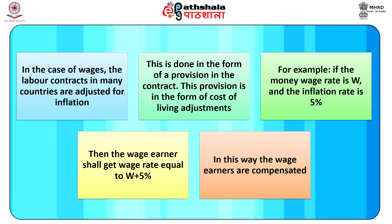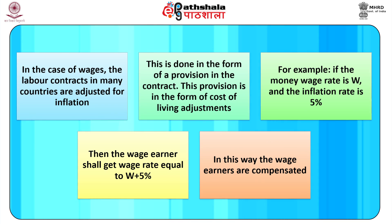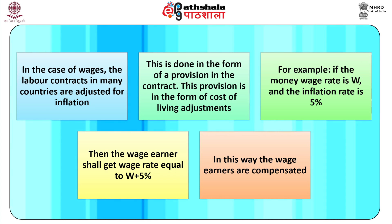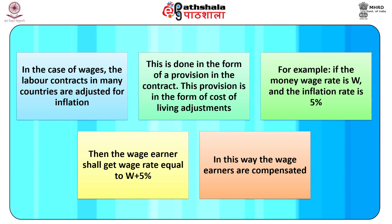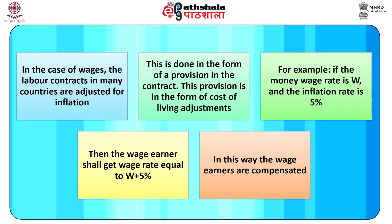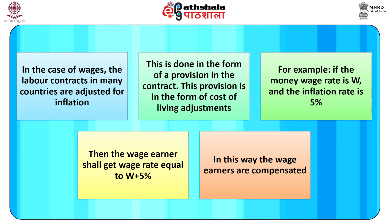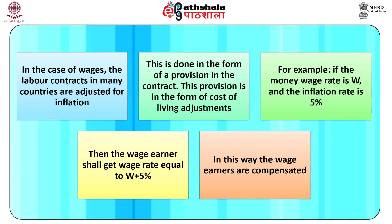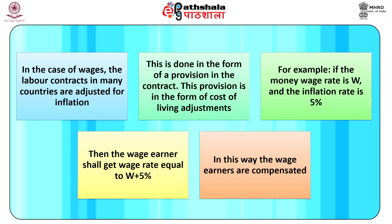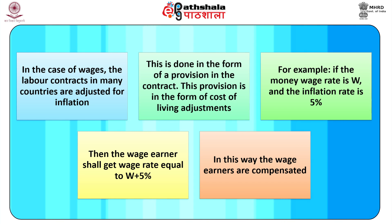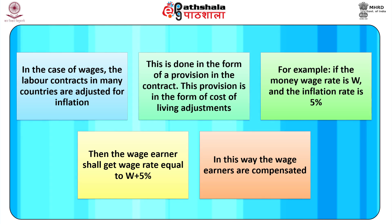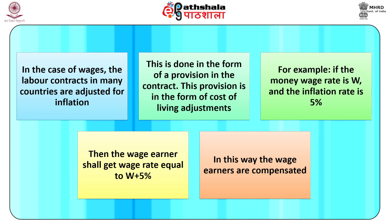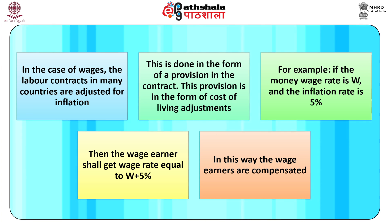In the case of wages, labour contracts in many countries are adjusted for inflation. This is done in the form of a provision in the contract called cost of living adjustments. For example, if the money wage rate is W and the inflation rate is 5%, then the wage earner shall get a wage rate equal to W plus 5%. In this way, the wage earners are compensated.